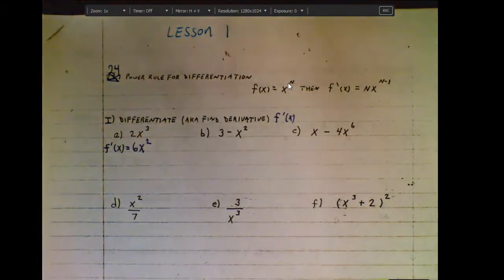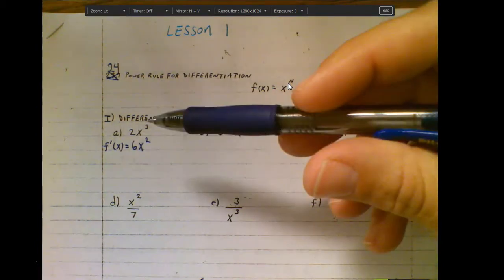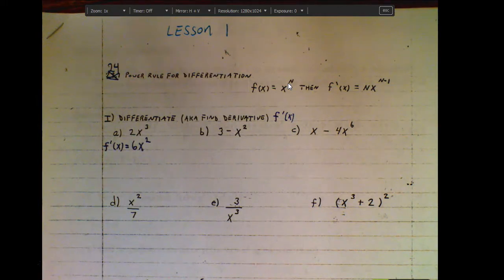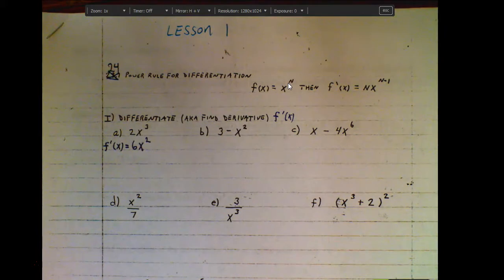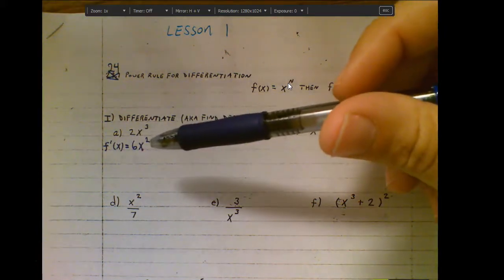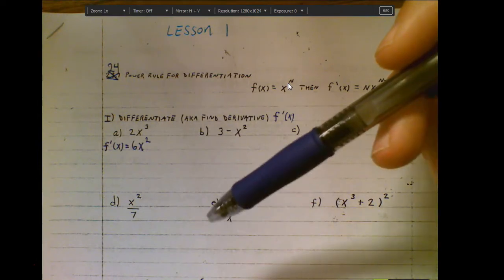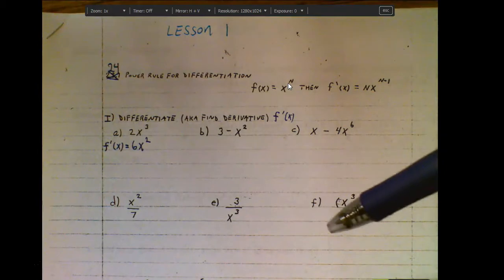This derivative can now be used to find the instant rate of change at any point on the function. One of the tedious parts of the last chapter was that even after doing all that work with the limiting process, it only worked for one specific point. But with the derivative, if I want the instant rate of change when x is one, I just plug in one. If I want it when x is two, I just sub in two. It's just so much quicker.